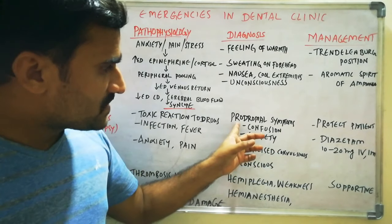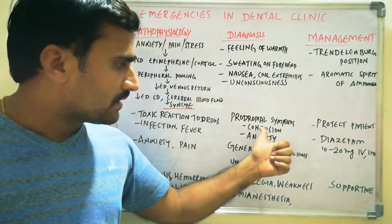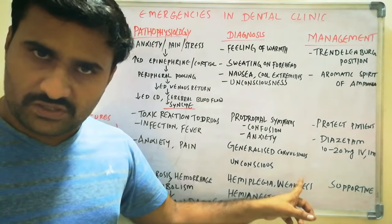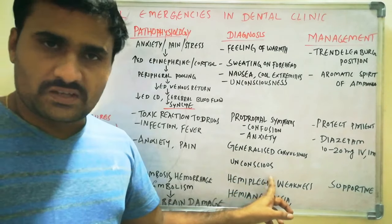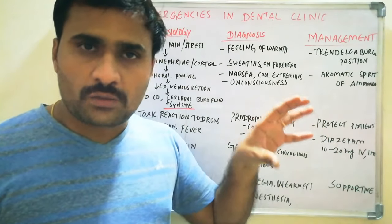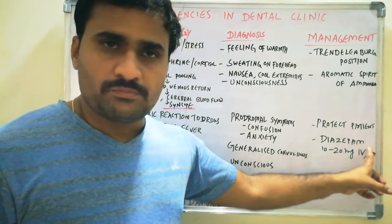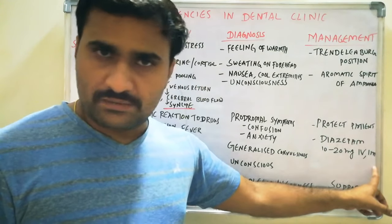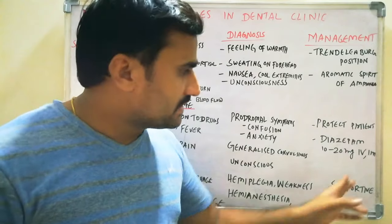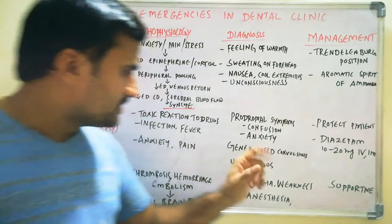To diagnose seizures, there are prodromal symptoms called aura — confusion or anxiety. After that, you notice generalized convulsions which may lead to unconsciousness. In management, the first priority is to protect the patient from sharp objects or a fall from the dental chair. Then give diazepam 10 or 20 mg IV or IM. IV is preferred. This is the management of seizures.